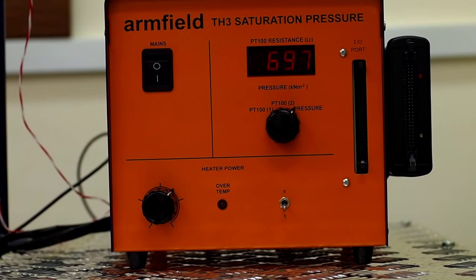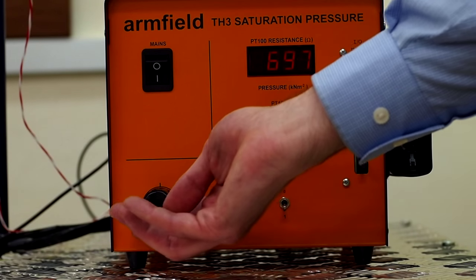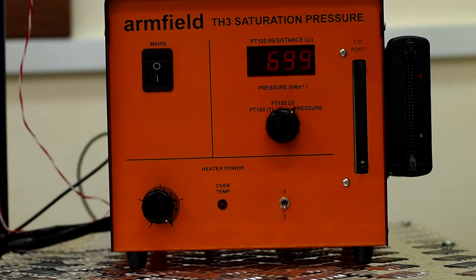The heater control knob controls how much electrical power is dissipated in the boiler. Turning the knob clockwise results in more power being sent to the boiler and the temperature and pressure will rise.